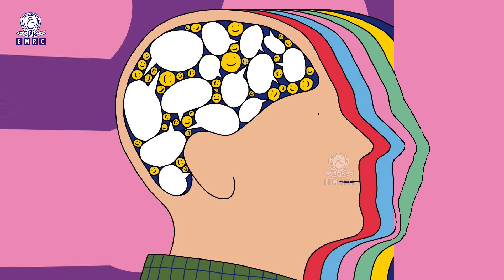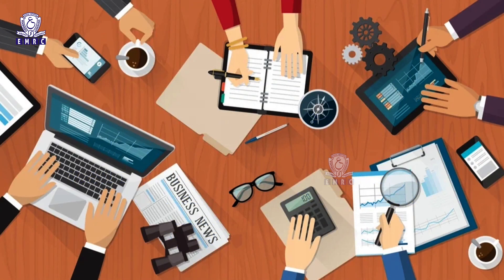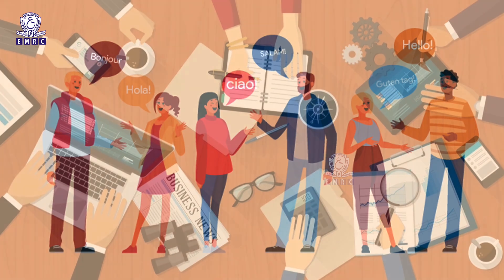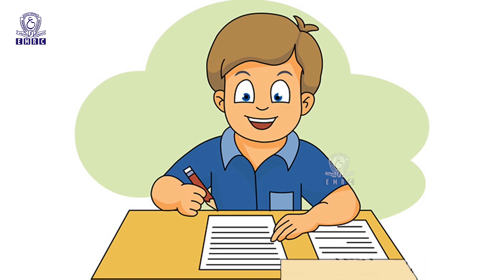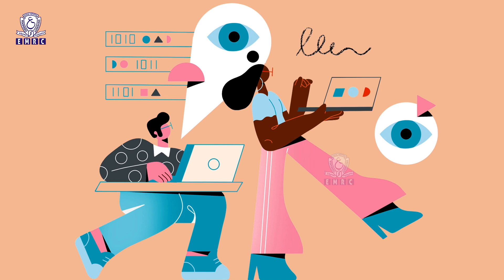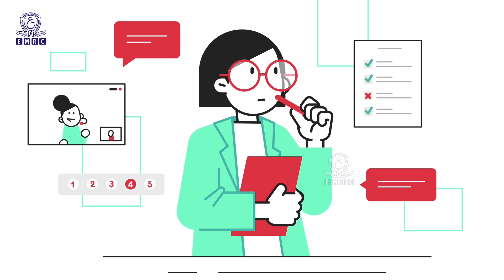Intelligence tests are of several types. They can be classified as verbal or performance tests based on the nature of items used, or as individual or group tests based on administration procedure. Verbal tests involve language, whereas nonverbal and performance tests use minimum language and involve solving tasks. Individual tests are conducted on one person, while group tests can be conducted on multiple individuals together. Depending on the extent to which a test favors one culture over another, it can be judged as either culture fair or culture biased.